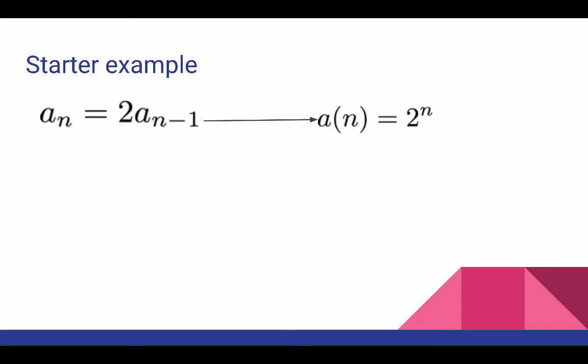Similar reasoning should convince you that if I have any similar recurrence relation where r here is just a constant, just a single number, then a(n) equals r^n will be a solution to that one.